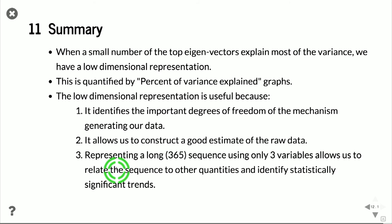Why is it useful? Because it gives you an insight into what is going on in your system. It identifies the important degrees of freedom of the mechanism that is generating our data. It allows us to construct a good estimate of the raw data. So we can basically just forget the 365 numbers and just use maybe five or ten numbers. And from those we can reconstruct our original data very well.